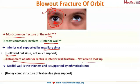Although the medial wall is the thinnest wall, it is supported by the ethmoidal sinus, which has a honeycomb structure — a collection of multiple small sinuses. This honeycomb-like structure gives more strength compared to the hollowed-out structure of the maxillary sinus. That is why the inferior wall, and not the medial wall, is the most commonly fractured wall, causing inability to look up.